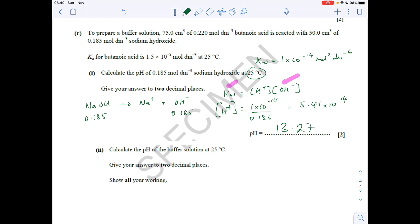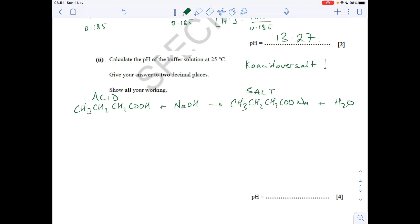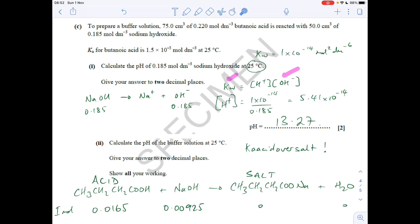The final part of the question is quite a tricky buffer calculation where we've got an excess of weak acid reacting with sodium hydroxide to form the salt. Basically we need to work out the remaining moles of acid, the amount of salt that's formed, work out their concentrations, and then plug them into the Ka acid over salt expression to get the H+, and then we can get the pH. The first thing I've done there is worked out the initial moles of the acid and the sodium hydroxide, and that's just from concentration times volume of the acid, concentration and volume of the base. You can see there that the acid's in excess, so we're going to have some of that left and we're also going to make some salt as well, and therefore that's why it's a buffer solution.